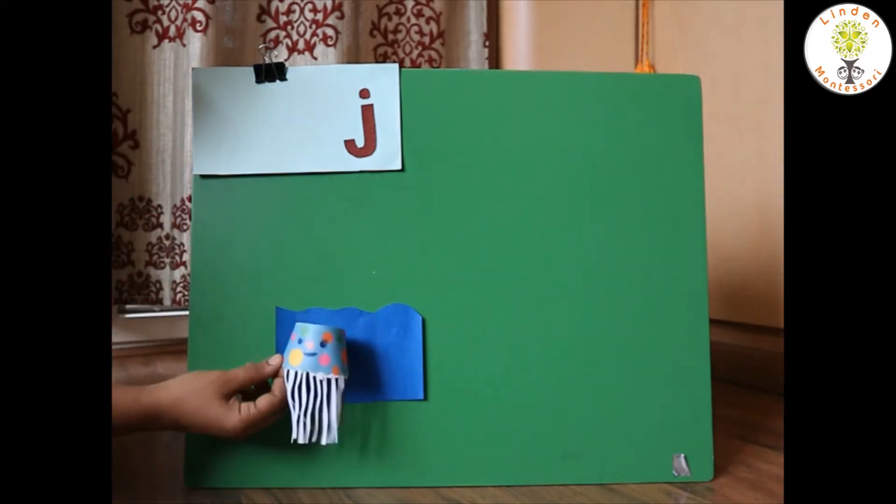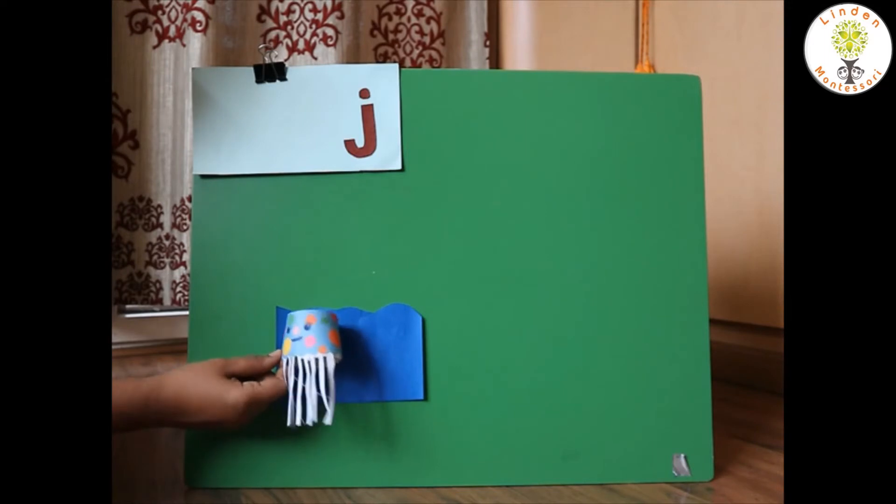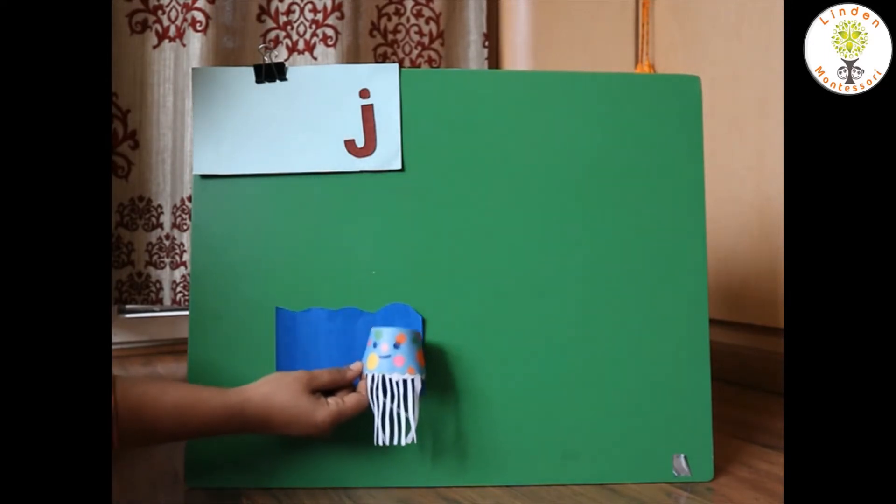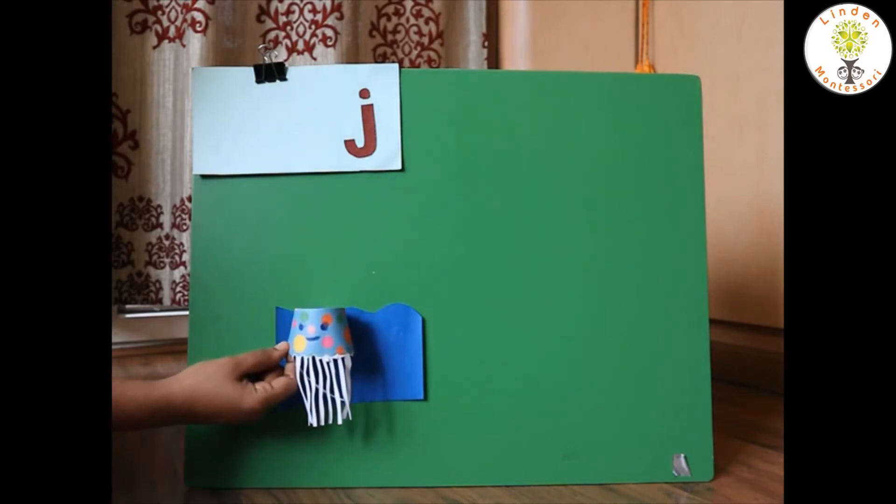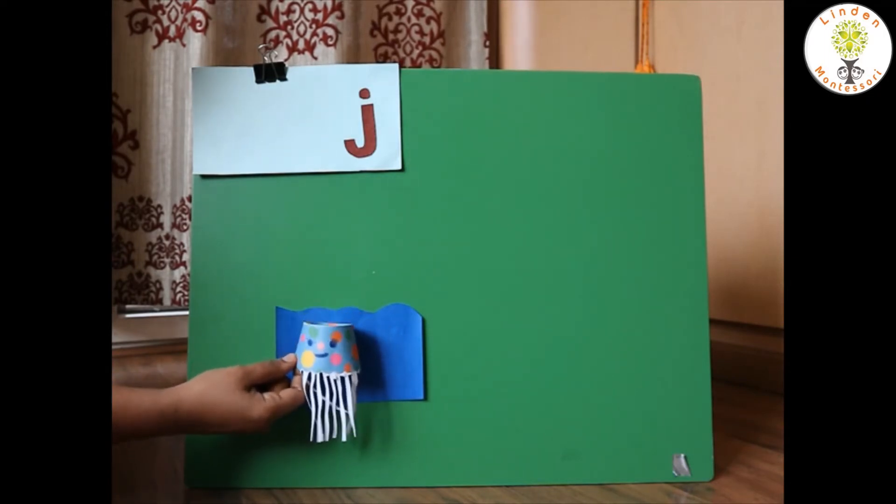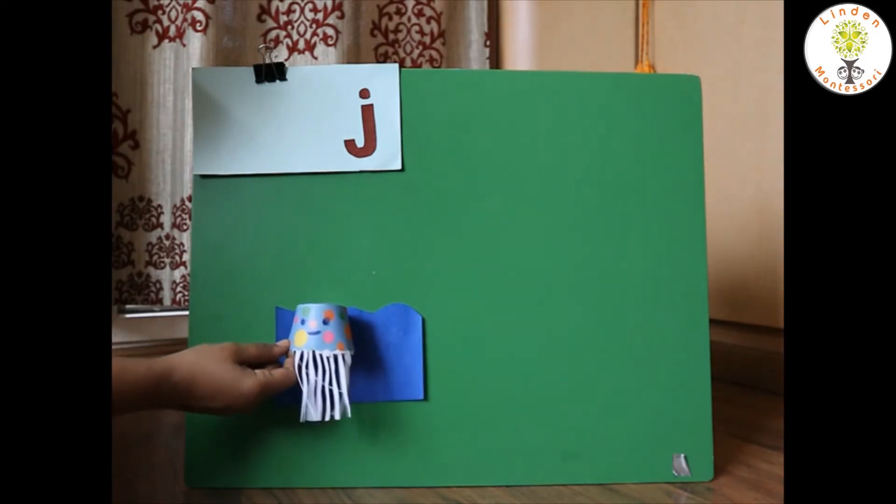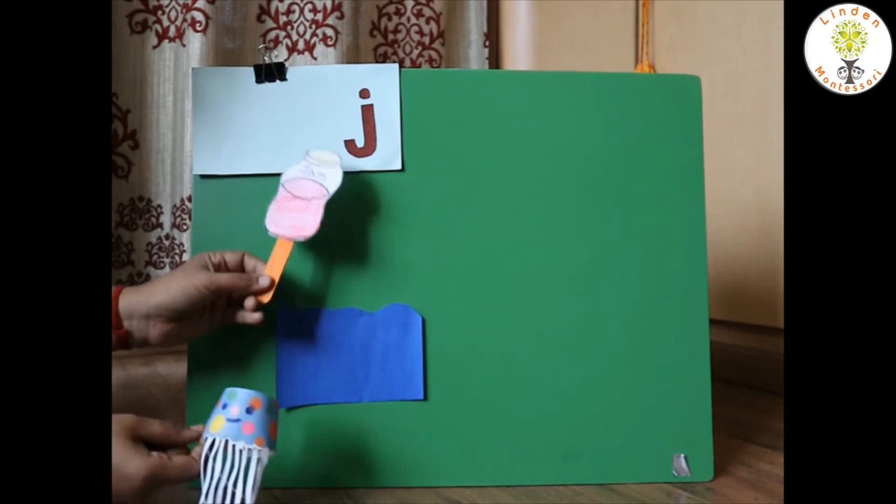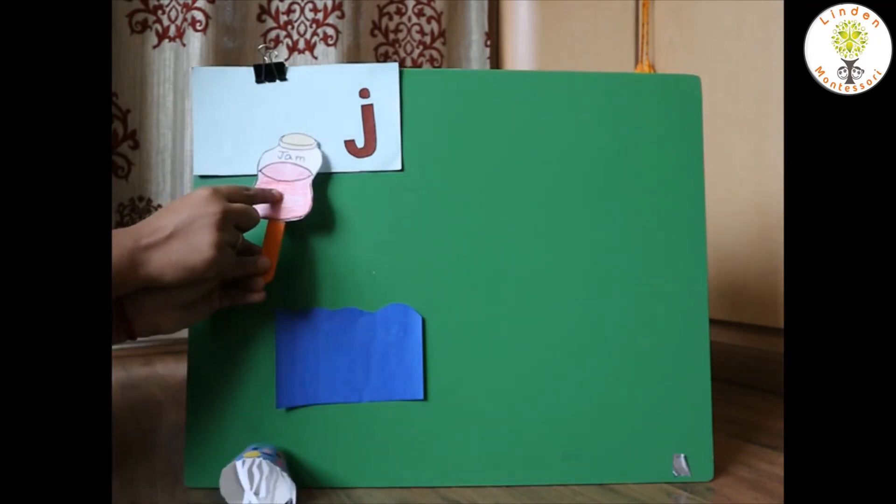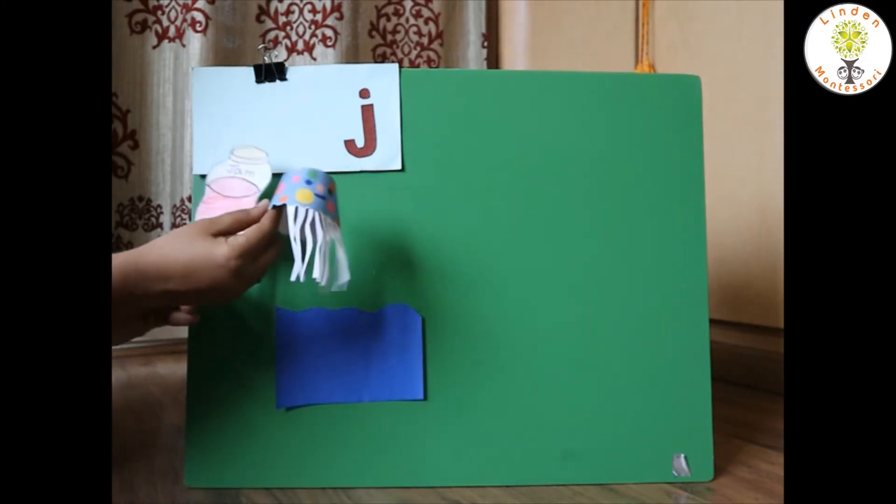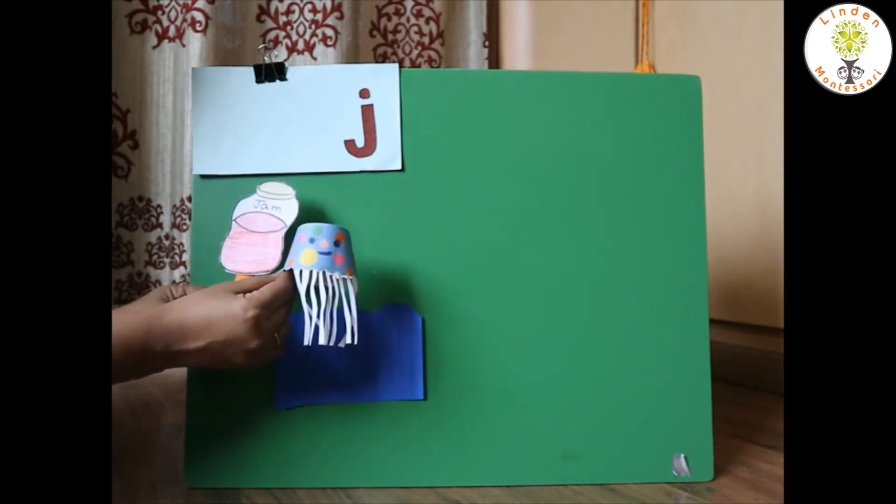Hello children, I am Jolly the jellyfish. I live in the ocean and apart from my food, I love to eat something which you all love to eat too. Can you guess what it is? It's jam. Jam begins with J. That gives me a lot of energy.